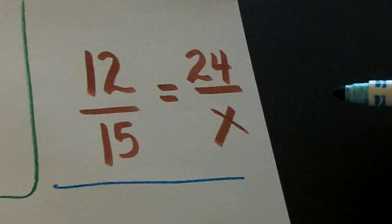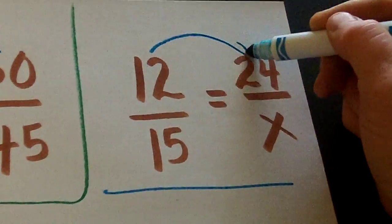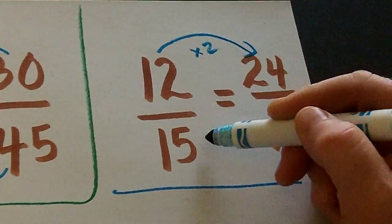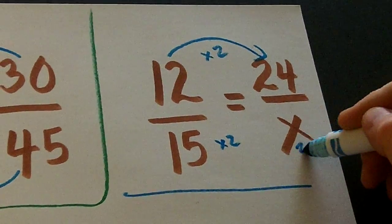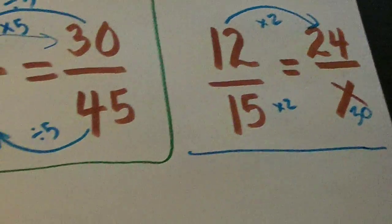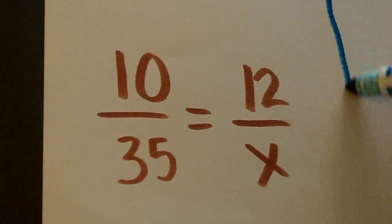Let's look at this one. How does 12 become 24? We multiply by 2. What's 15 times 2? X is 30. See how easy that is?